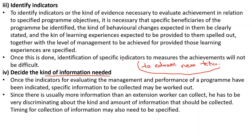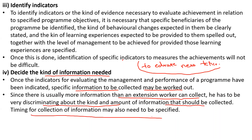Fourth, decide the kind of information needed. Once indicators are specified, specific information to be collected may be worked out. Since there is usually more information than the extension worker can collect, he has to be discriminating about the kind and amount of information to be collected, and the timing for collection of information should also be specified.